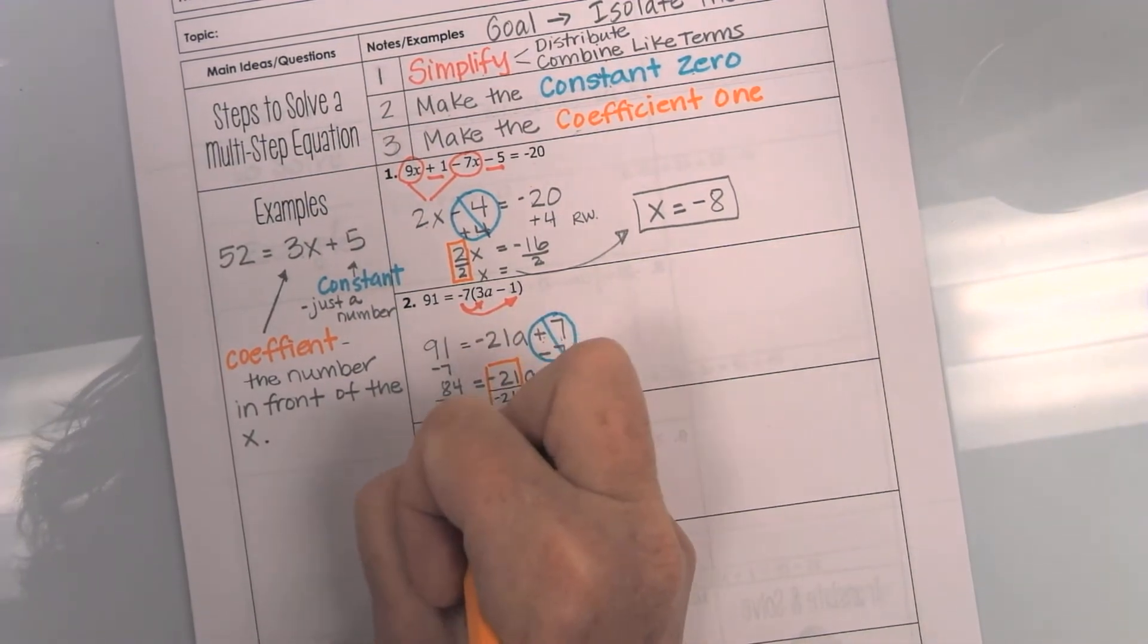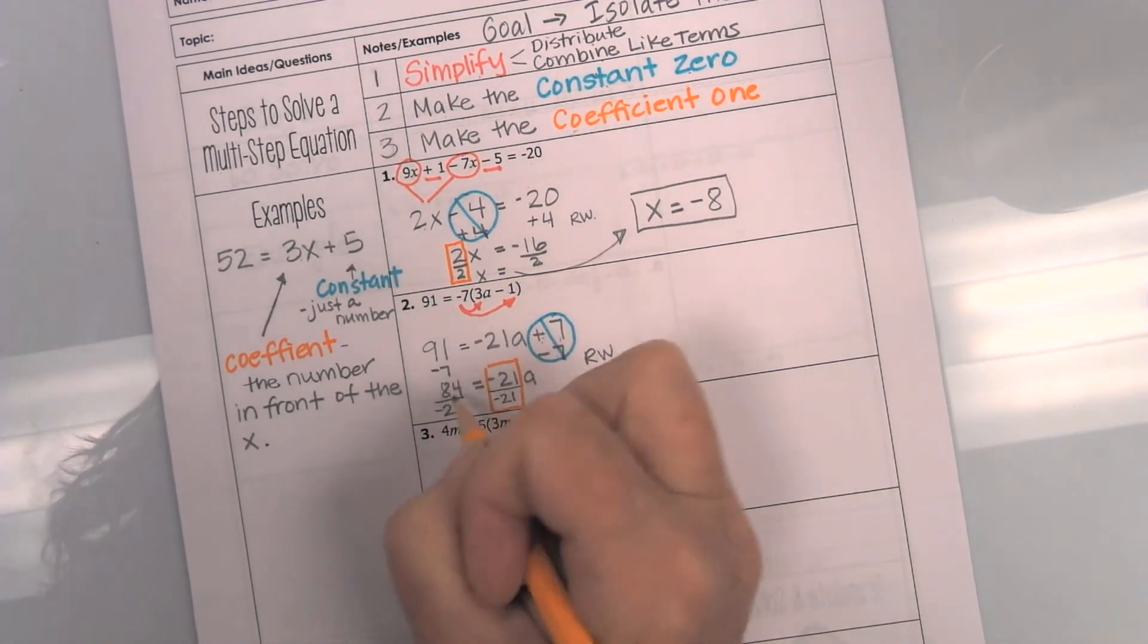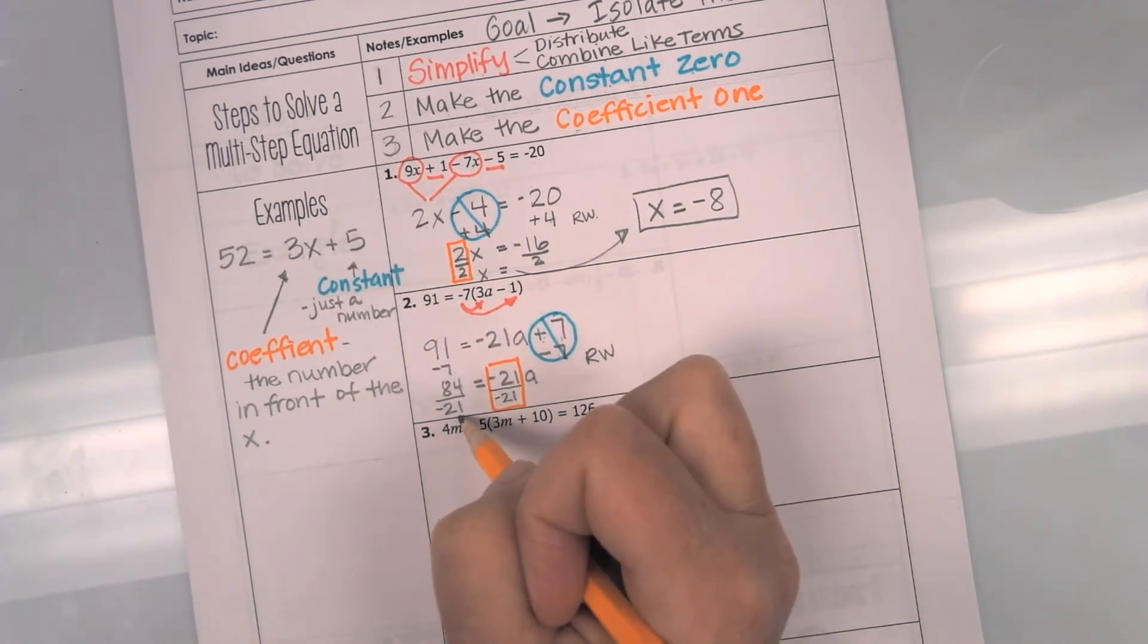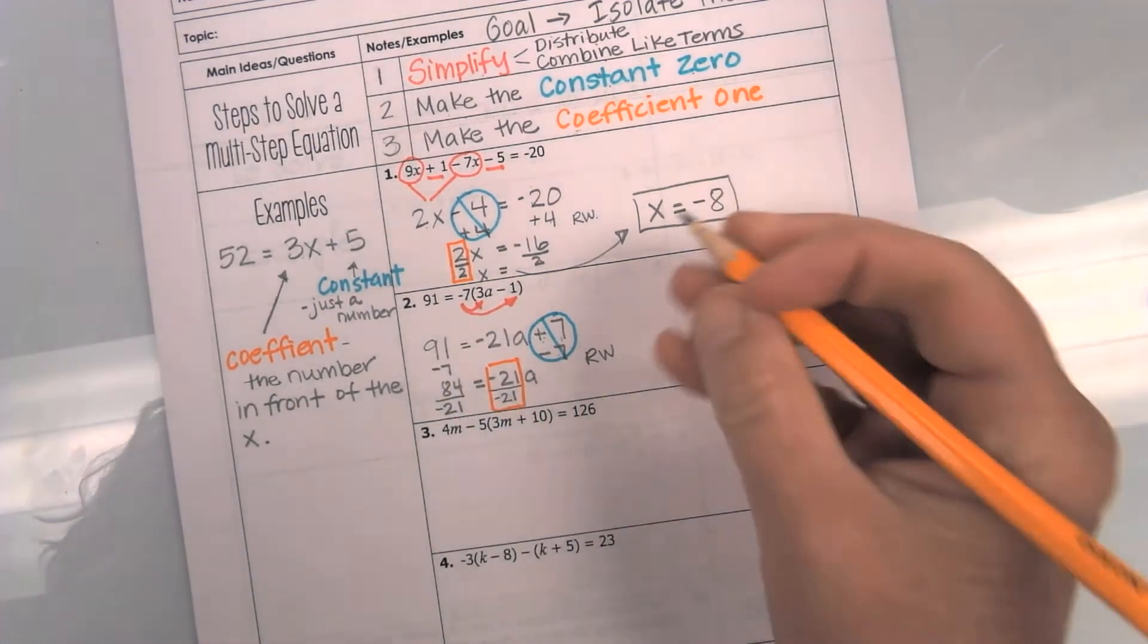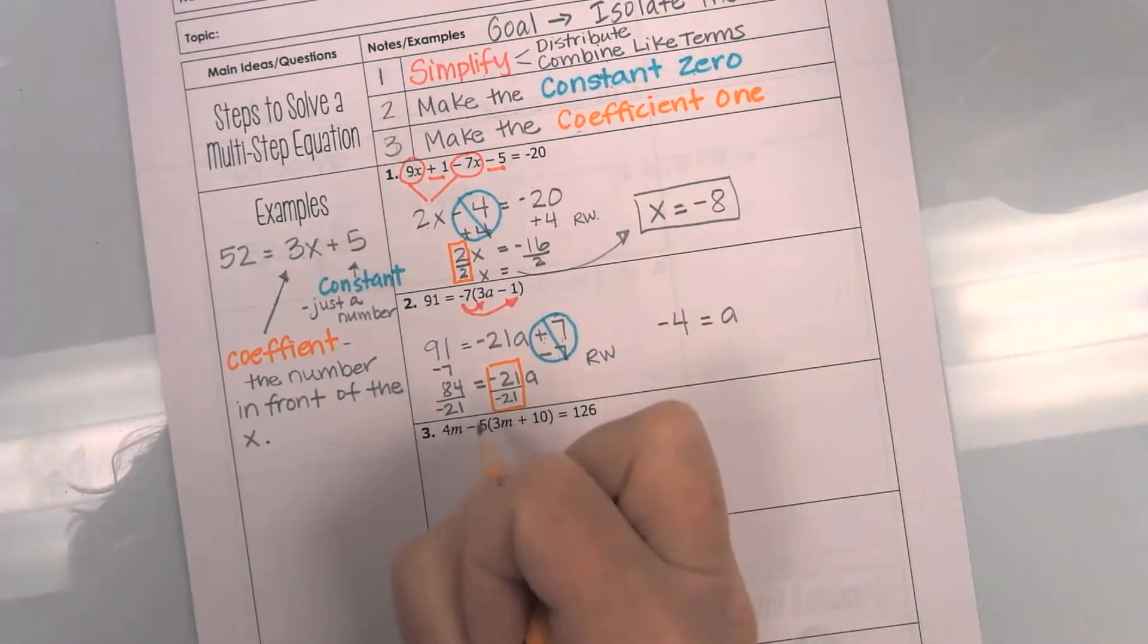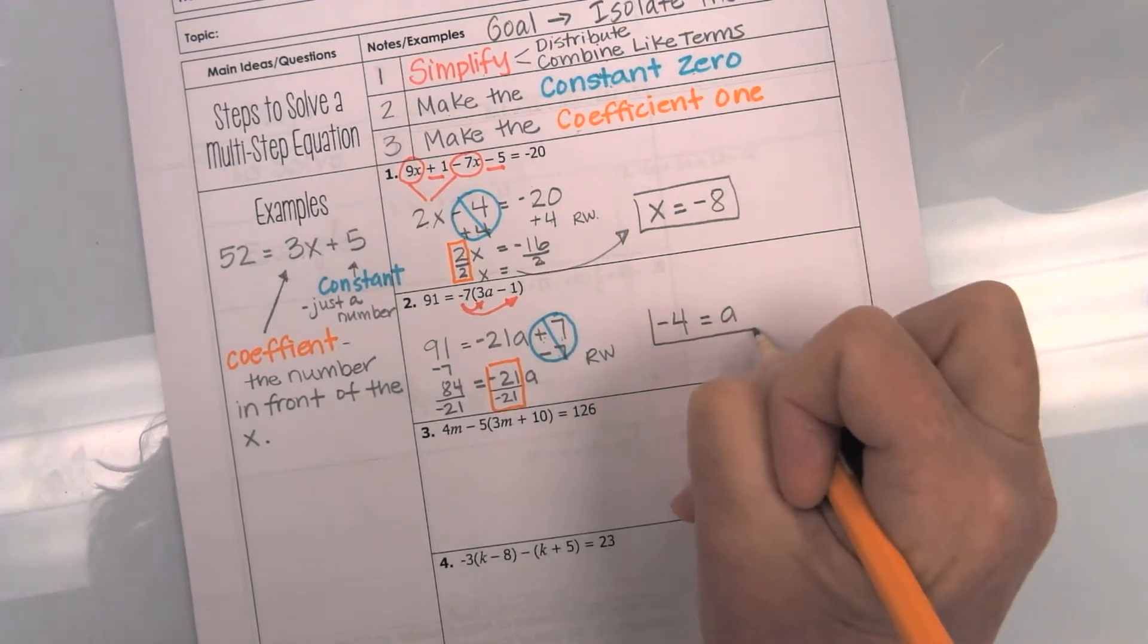whatever I do to one side, I do have to do to the other. So, in this case, if you want to get a calculator, 84 divided by a negative 21 is actually just going to be a negative 4. Equals a. And I didn't have enough room, so I moved it over here.